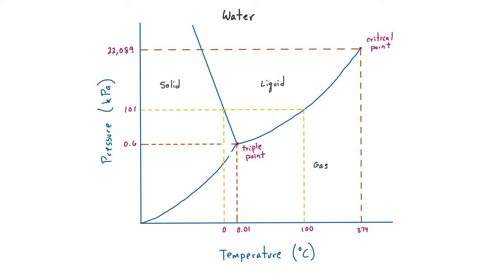A phase diagram is a graph of pressure versus temperature. Different phases of a substance are separated by solid lines on the graph. These solid lines are called phase boundaries. In this phase diagram of water, you can see the solid marked here, the liquid here, and the gas is here.